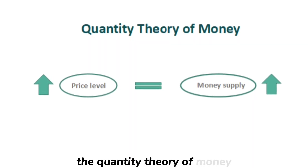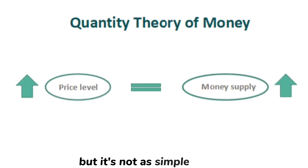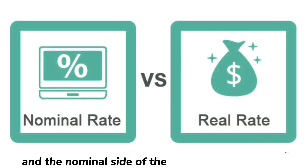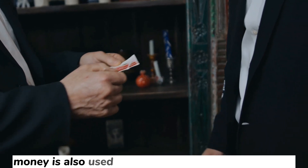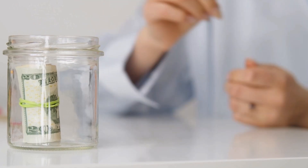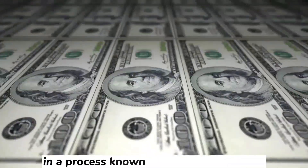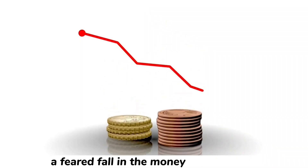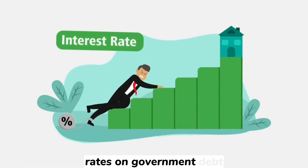In conclusion, the quantity theory of money states that an increase in the money supply leads to an increase in prices, but it's not as simple as that. The real side of the economy and the nominal side of the economy are separate, and the velocity of money is not constant. Money is also used not just as a medium of exchange, but as a store of value. Today, central banks print money electronically and use it to buy government debt in a process known as quantitative easing. Their aim has been to prevent a feared fall in the money supply, and so far the most visible effect has been to reduce interest rates on government debt.